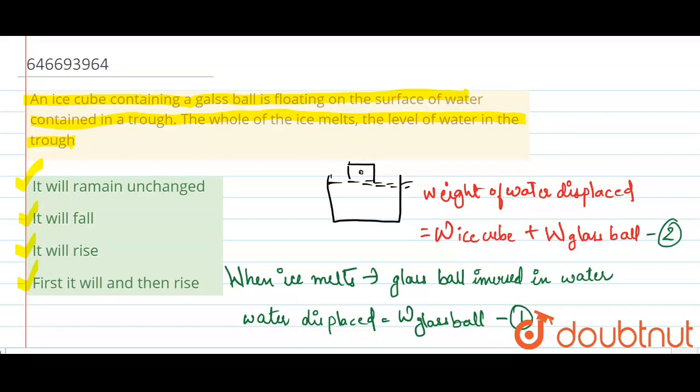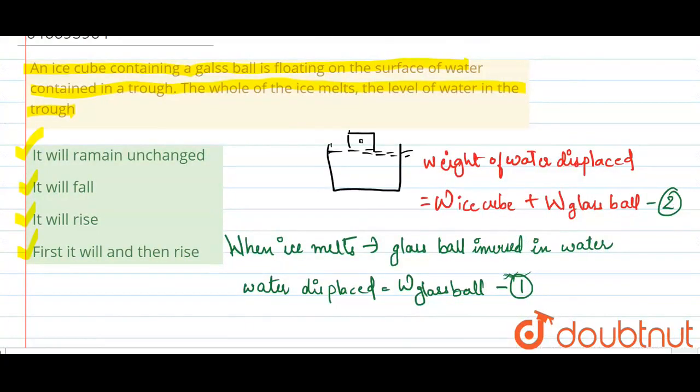Now, here the water, here it is more the weight of, see, here it is only the weight of glass. Here it is the weight of glass as well as the weight of ice cube. Therefore, when the ice cube melts, at that time, the water displaced is less. So, the level of the water in that trough will fall.